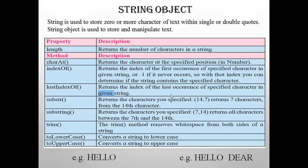Next is the `trim()` method. `trim()` removes white spaces from both sides of a string — any spaces at the beginning or end of the string are removed and the output is displayed without those spaces. Next is `toLowerCase()`, which converts a string to lowercase. If you give capital H-E-L-L-O, it will output small h-e-l-l-o. Just opposite, `toUpperCase()` converts a string to uppercase when input is in lowercase letters.